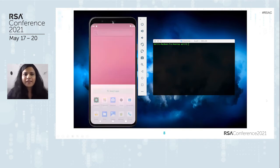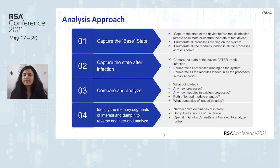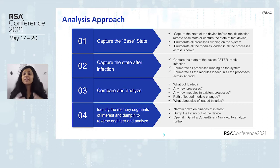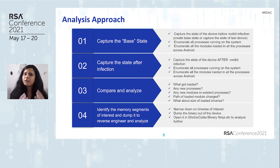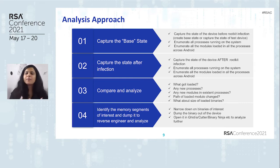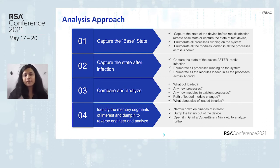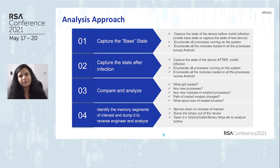Now having looked at this demo, let's move towards our analysis approach. We've split the analysis into four intuitive steps. First, find the state of the system before the infection — enumerate all running processes and all modules loaded within those processes. Second, perform the infection. Third, capture the state again after infection, enumerating all processes and modules. Fourth, compare and analyze the two states, then identify memory segments of interest and dump them for reverse engineering.